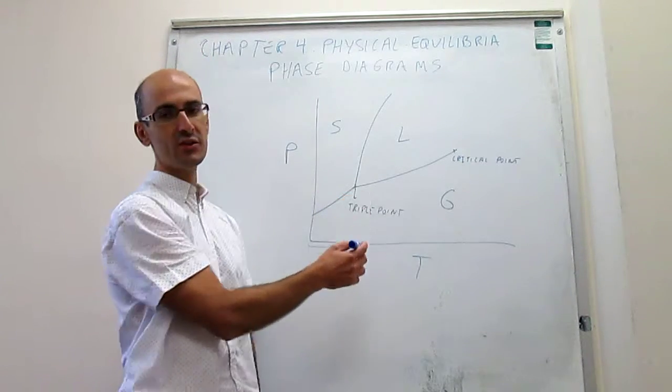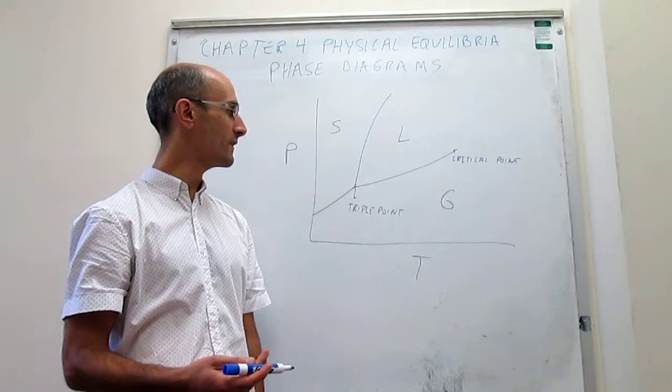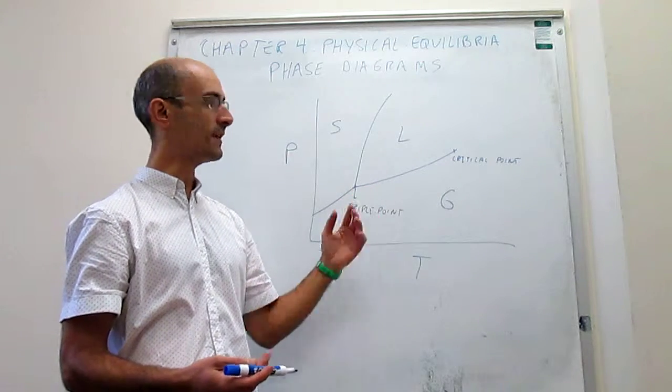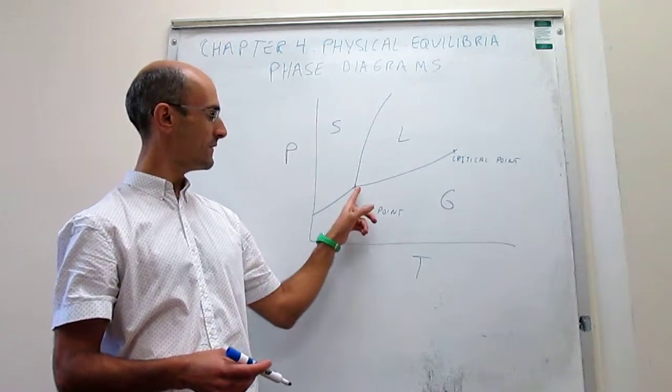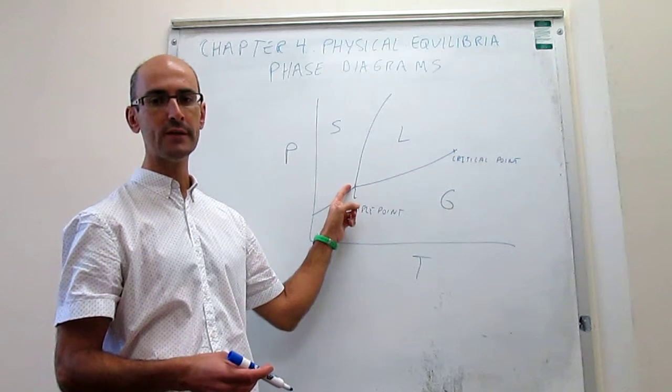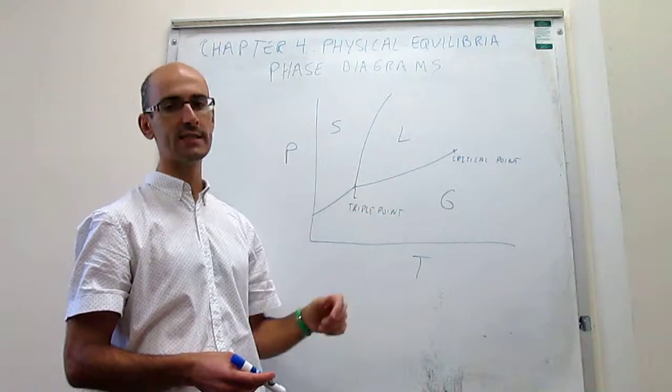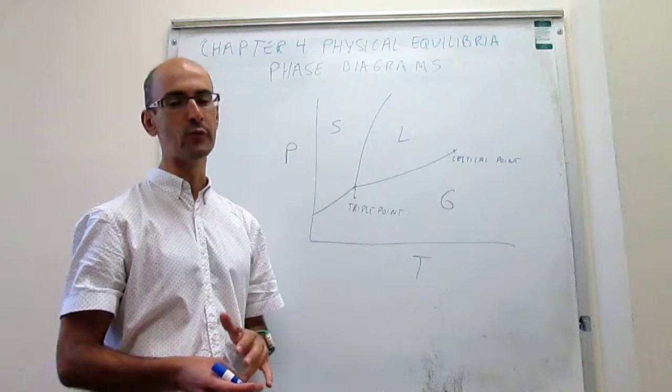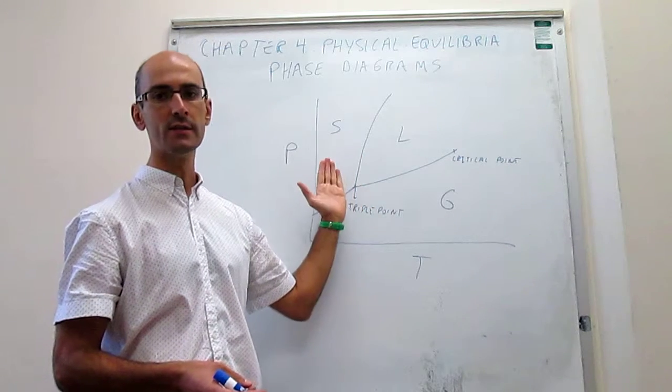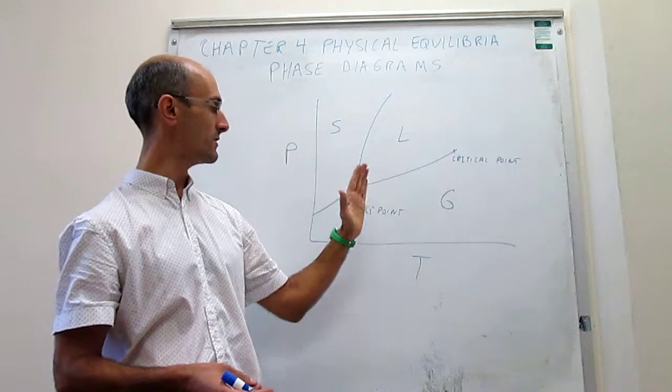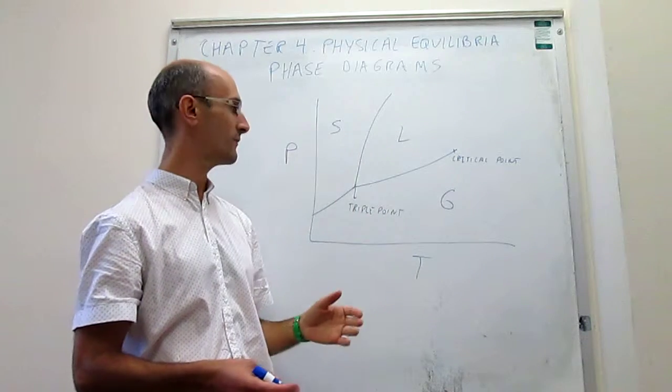One of them is that changes from substance to substance. No two substances have the same triple point. And then the other thing that is important is that this triple point serves to put a barrier to the liquid phase. Notice that the pressure for the triple point is the lowest pressure at which the liquid can exist. And the liquid will not be able to exist at a pressure lower than that of the triple point. And also notice that the temperature of the triple point determines the lowest temperature at which the liquid can exist.